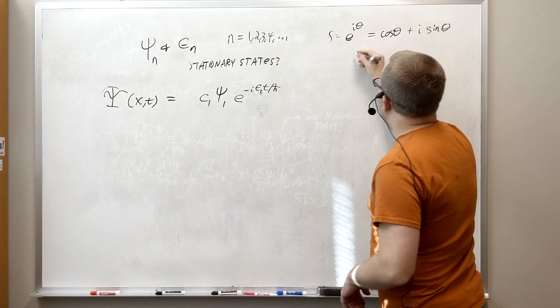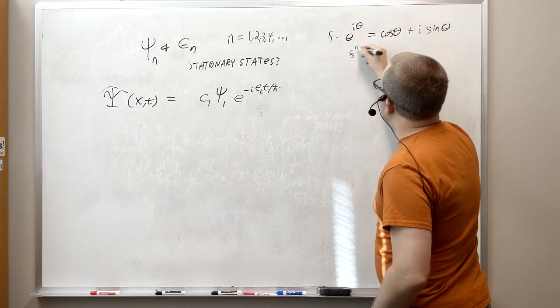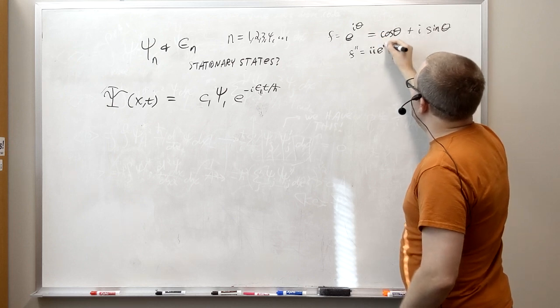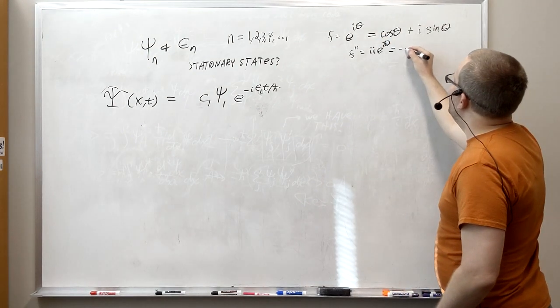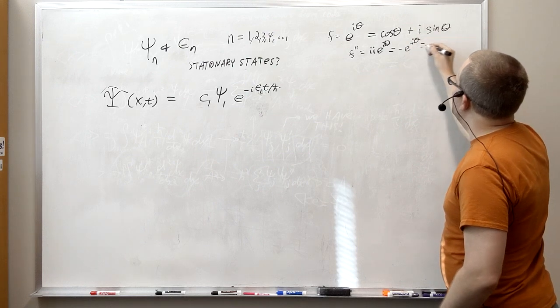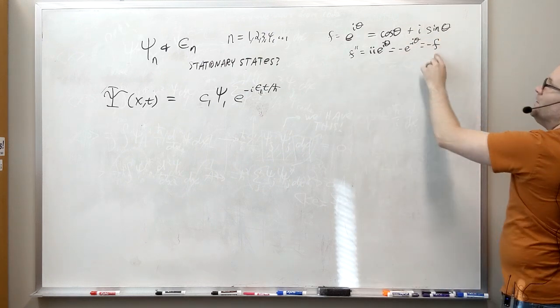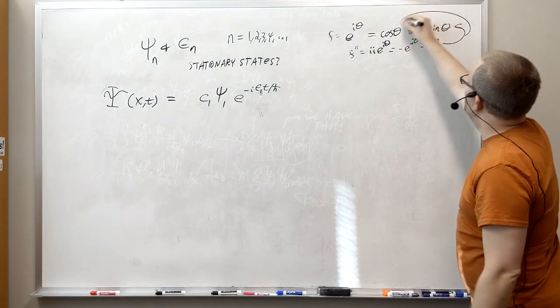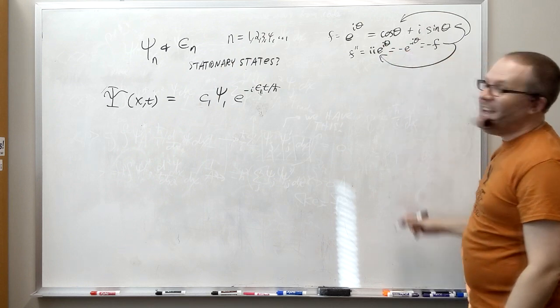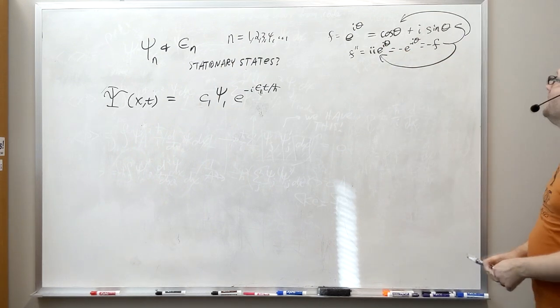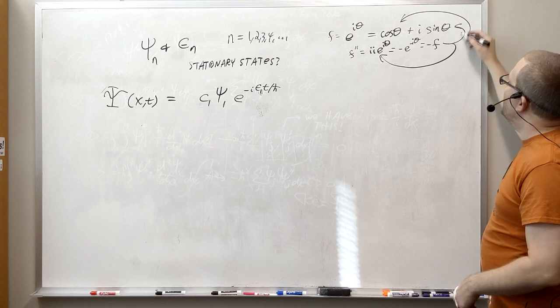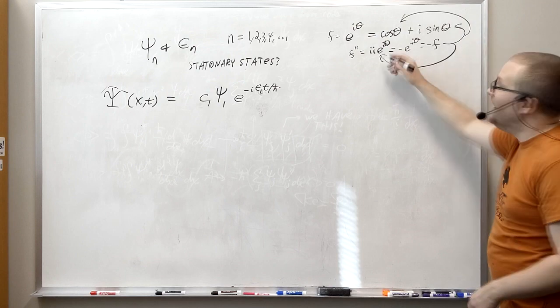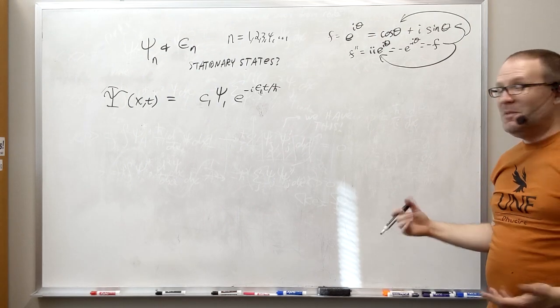It actually makes a lot of sense if you think about it in terms of differential equations. So if this were your f, your f' would be 2i's times e to the i theta, and that would be negative e to the i theta, which is equal to negative f. So f double prime equals negative f is a differential equation that has sine and cosine as trig functions, and it has e to the i theta as a solution, which is pretty cool.